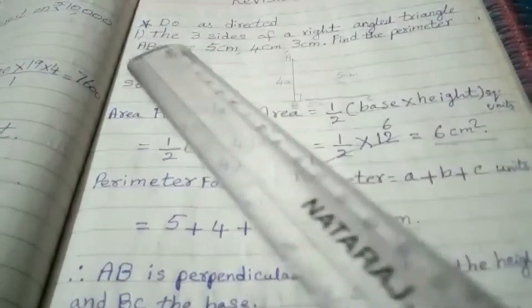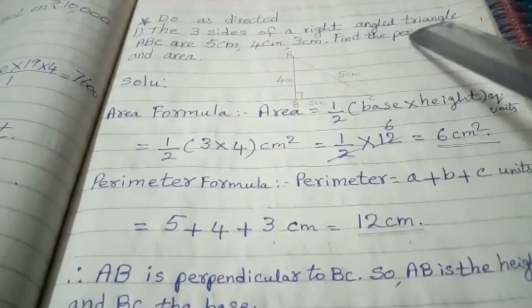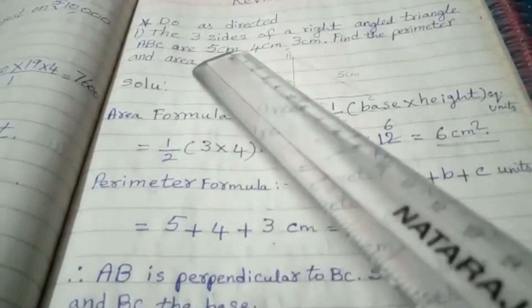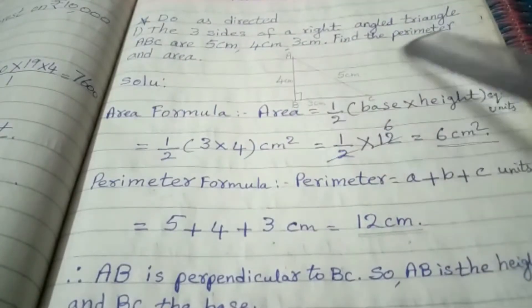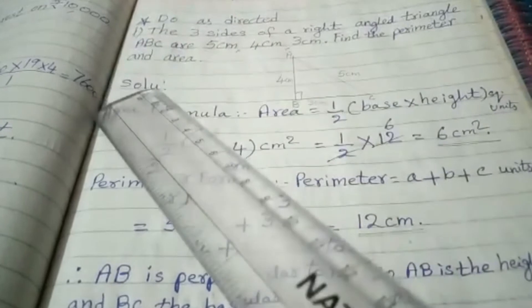Do as directed. The three sides of a right angled triangle A, B, C are 5 centimeters, 4 centimeters, 3 centimeters. Find the perimeter and area. Solution.